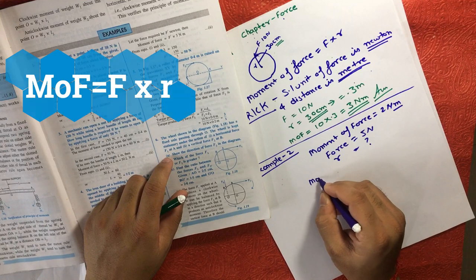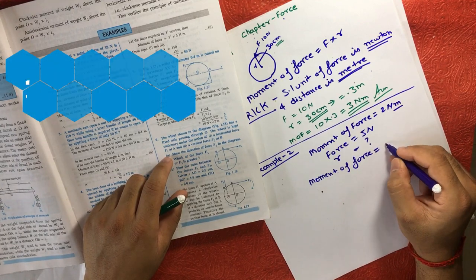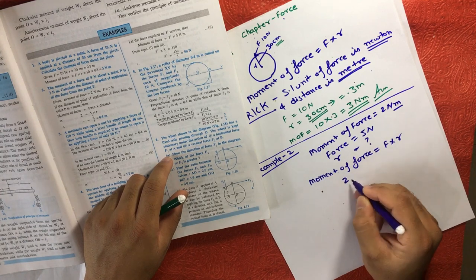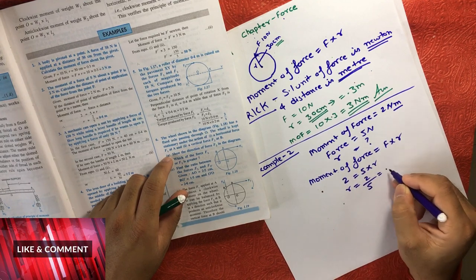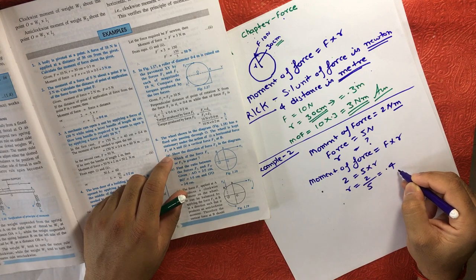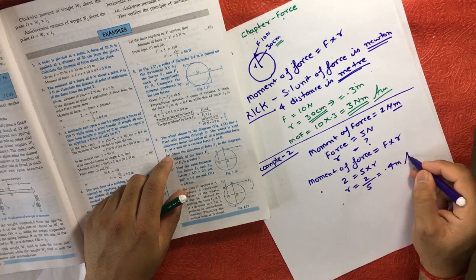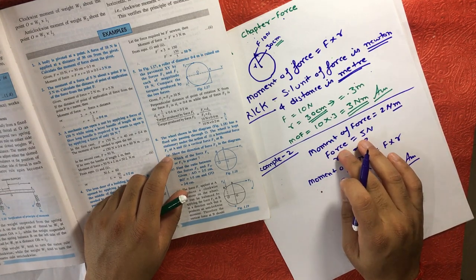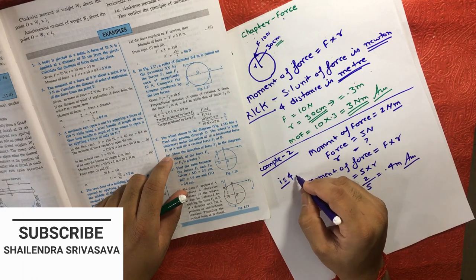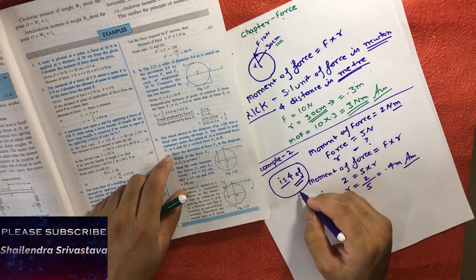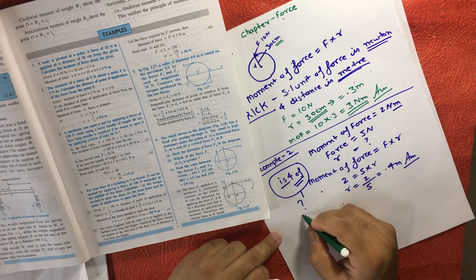It's asking about the distance, so it's very easy now. We know the formula: moment of force equals force into distance. So: 2 equals 5 into r. Therefore, distance r equals 2 divided by 5, which is 0.4 meters — meter because the unit was already given in meters. Pause the video and think about it. Hope you understand the trick — always remember there is a difference between 'is' and 'of', and always ask yourself what each value represents.